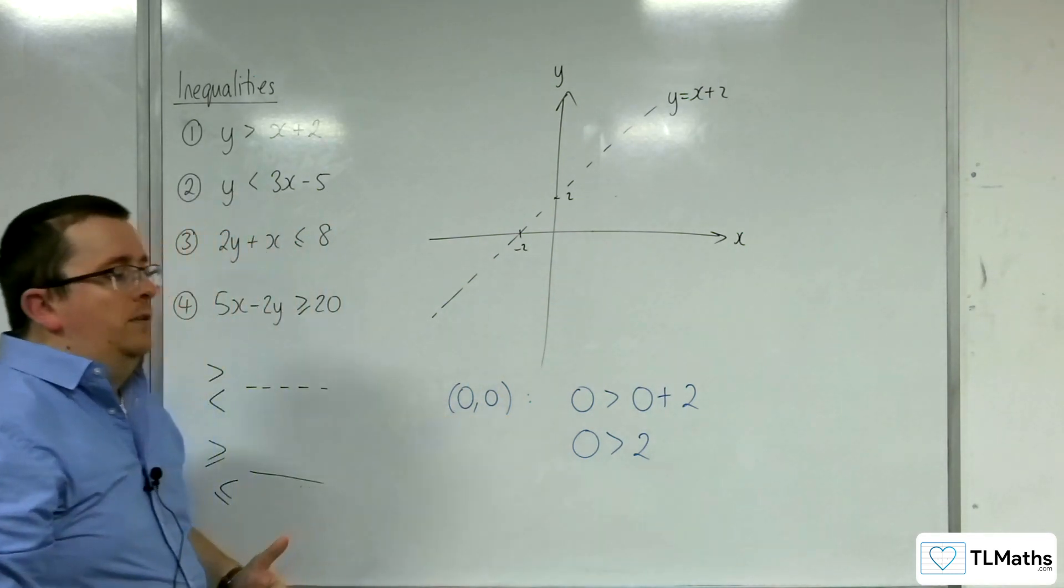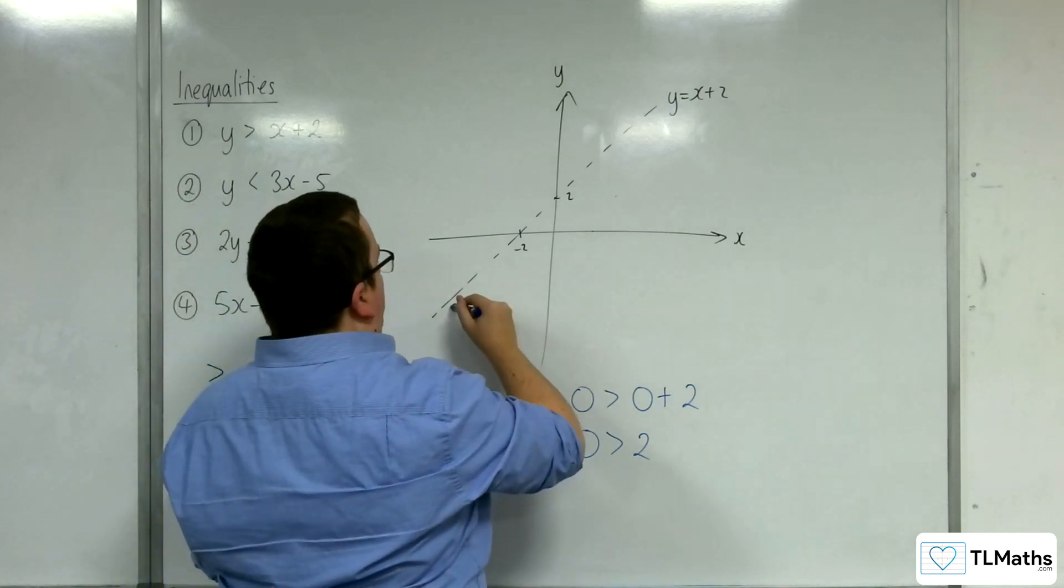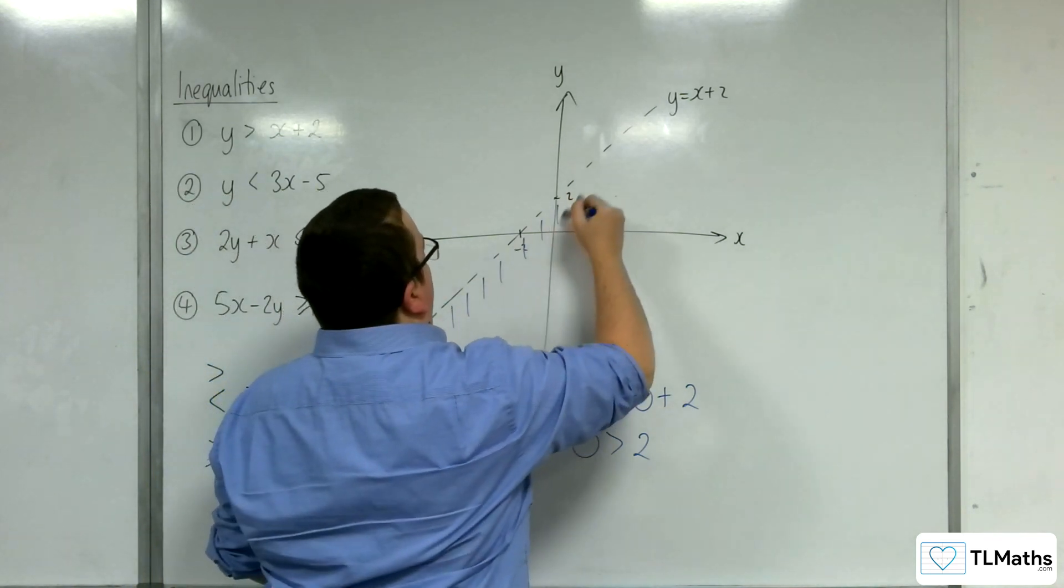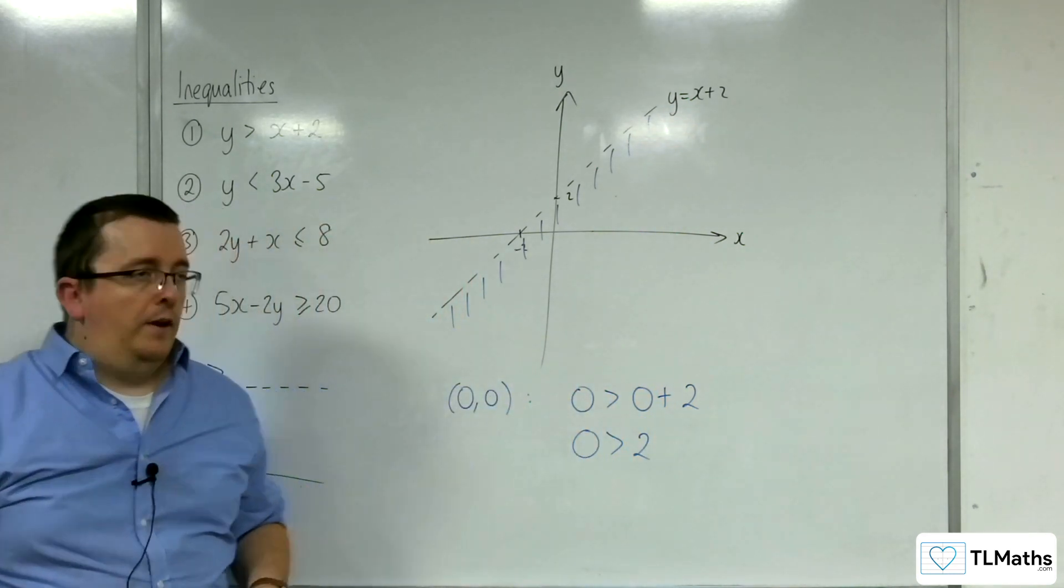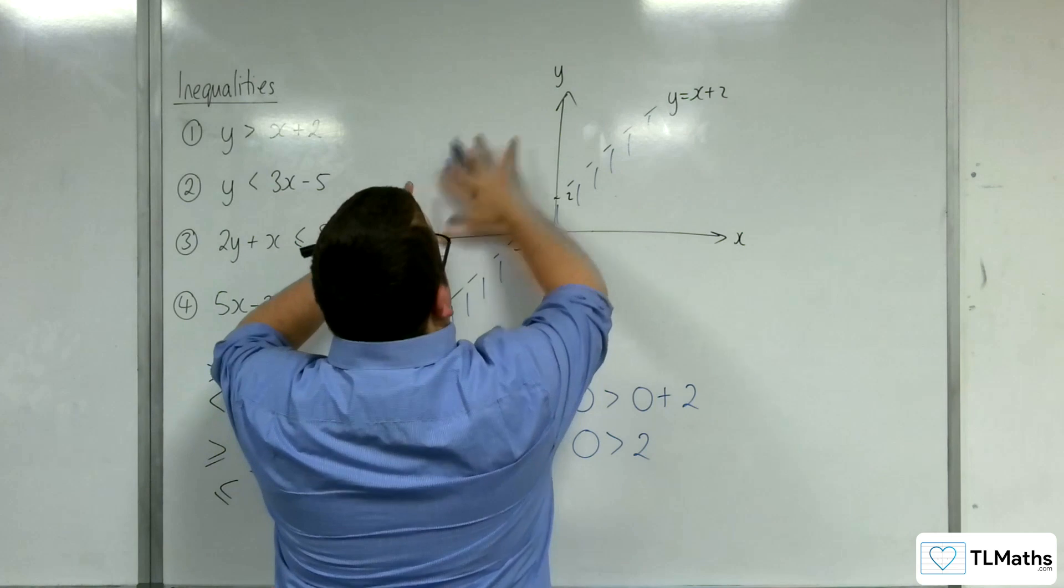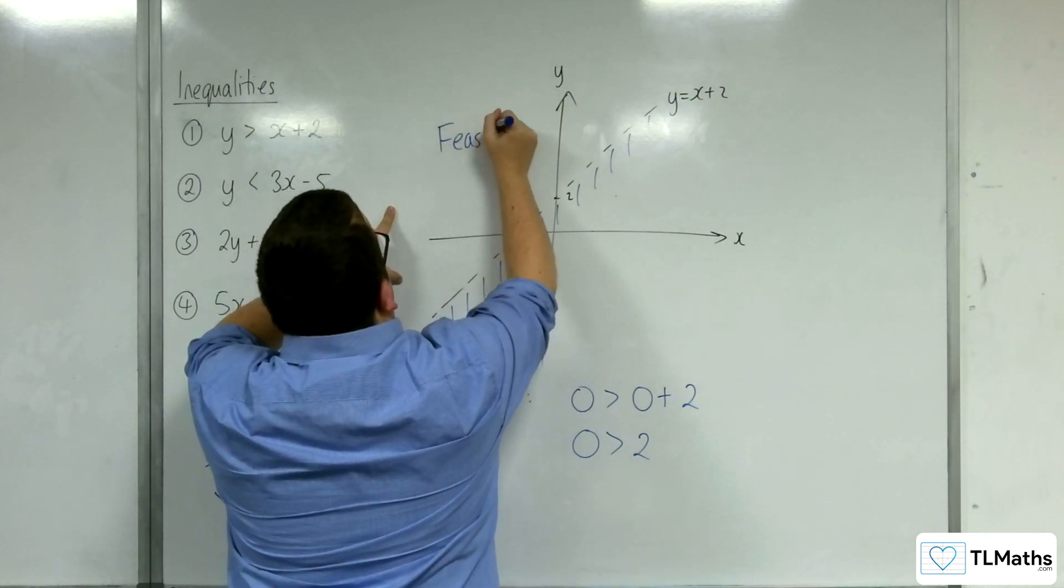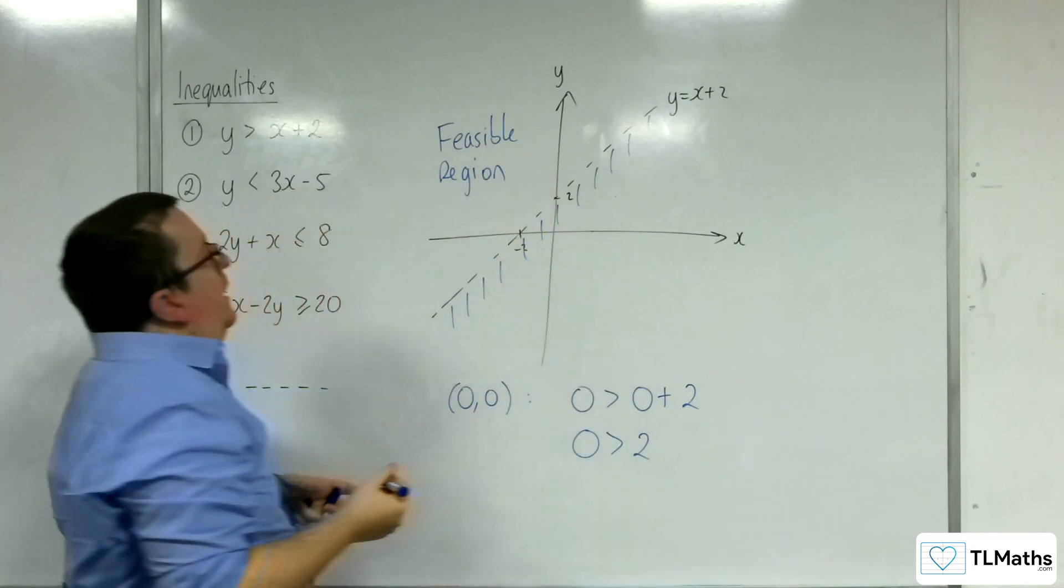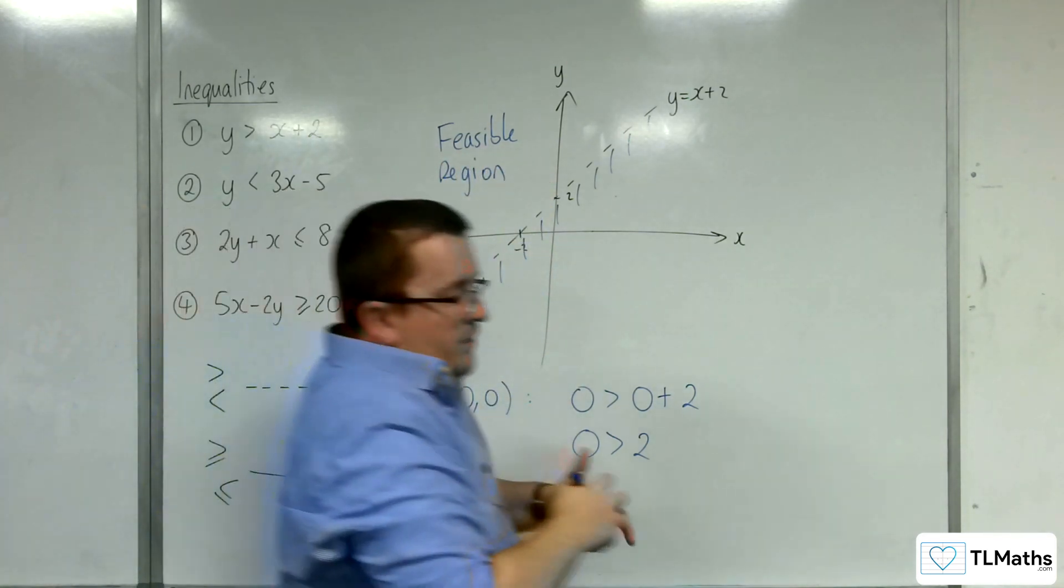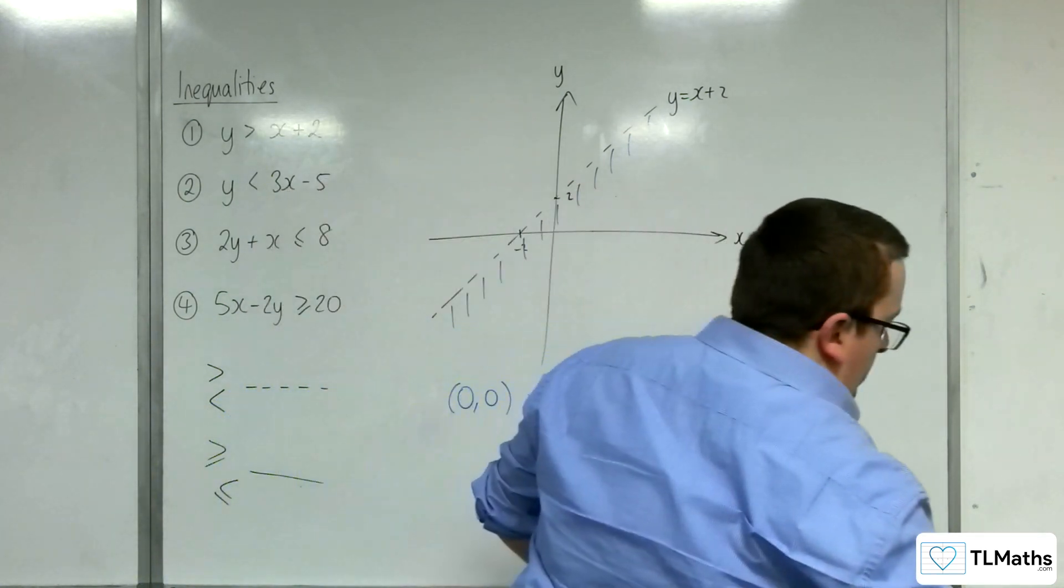Now, as I said, how do you identify that? Some teachers will do this and identify the region you don't want. So, that then you can say, right, this is the bit I want. And sometimes you would refer to that as the feasible region. And that's like an overhang from linear programming. Or you might label it with R for region.